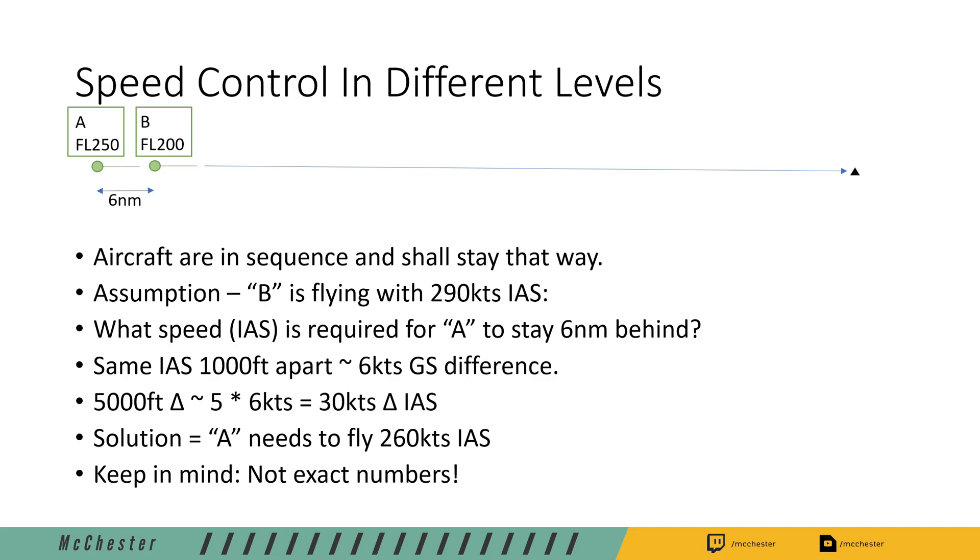Once again I have to emphasize that those numbers are not exact numbers. The difference per thousand feet differs vastly depending on the altitude. Closer to the ground it's more like five knots in difference and once you are at flight level 300 something the difference is gonna be seven knots per thousand feet. But these are just ballpark numbers, just values that you can work with, and you have to monitor situations like this anyway. So therefore you can adjust the speed any time.